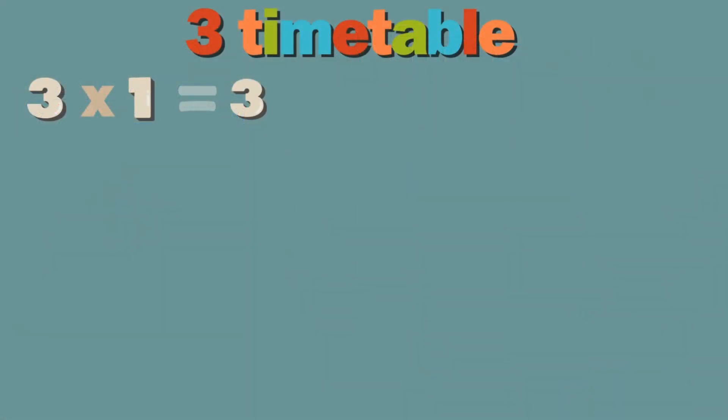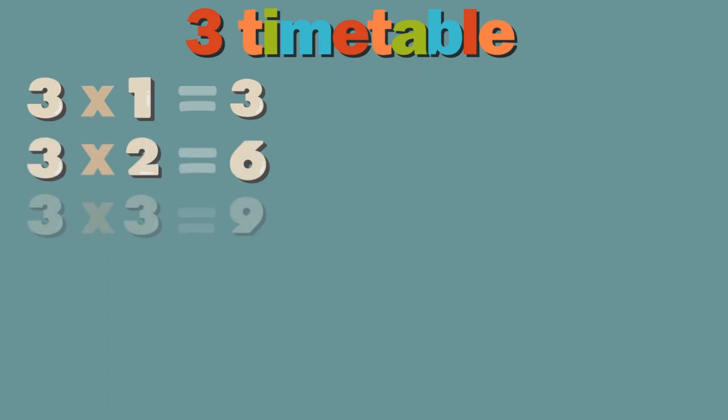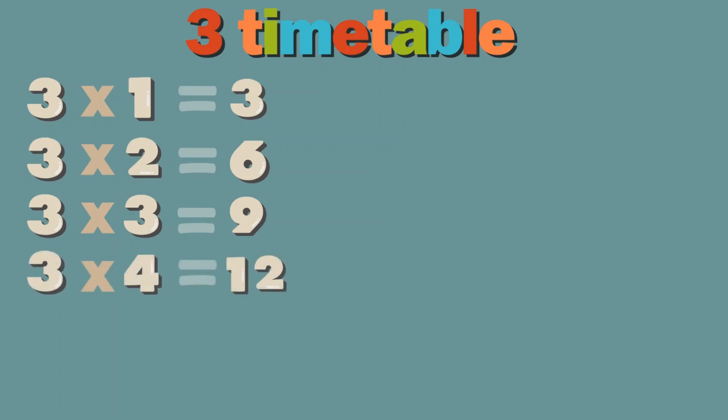3 times 1 equals 3. 3 times 2 equals 6. 3 times 3 equals 9. 3 times 4 equals 12. 3 times 5 equals 15.